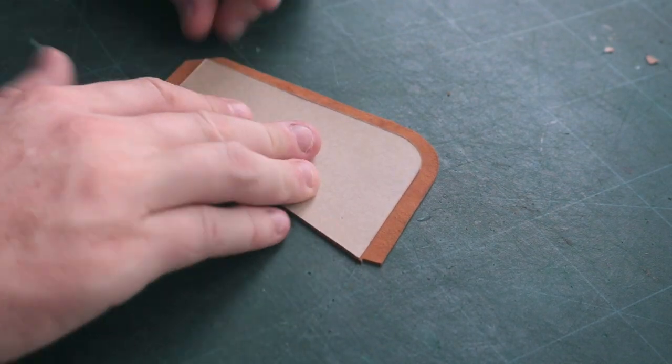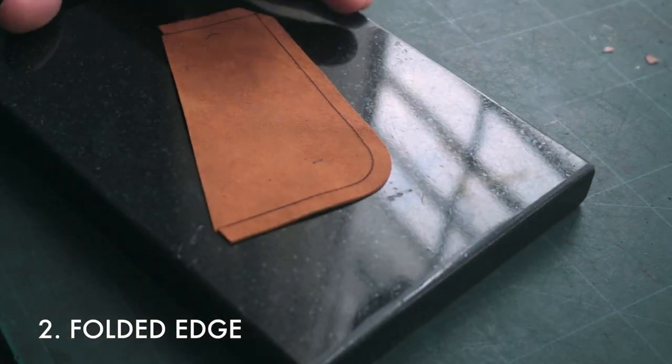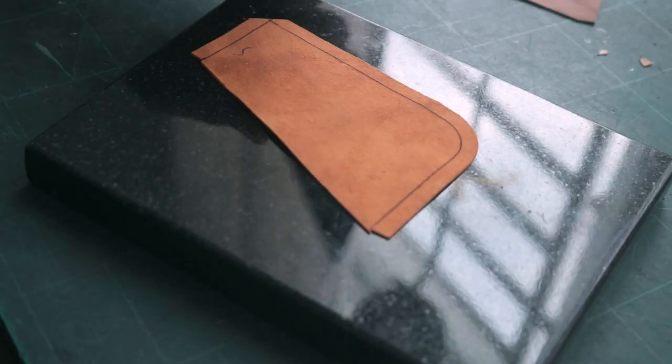Let me now show you the folded technique. I'm tracing a line seven millimeters from the edge and I'm going to skive all that really thin.